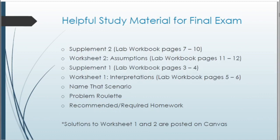For helpful study material for the final exam, make sure you check out those supplements and worksheets within the lab workbook. Supplement 1 and Worksheet 1 go over all the interpretations we've covered, while Worksheet 2 and Supplement 2 go over the assumptions as well as a full regression type test. Other helpful tools include 'name that scenario,' Problem Roulette for past exam questions, and both the recommended and required homework. Solutions to Worksheets 1 and 2 are posted on Canvas.